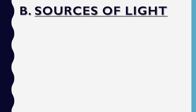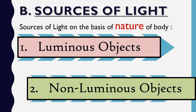After learning about the sources of light on the basis of origin as natural and man-made, let us now learn about another category of sources of light, which is on the basis of the nature of the source or the body. It is categorized into two categories: number one, luminous objects, and number two, non-luminous objects.